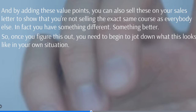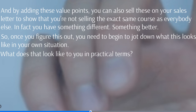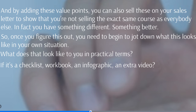Once you figure this out, you need to begin to jot down what this looks like in your own situation — in practical terms. If it's a checklist, a workbook, an infographic, or an extra video. For example, if you're applying a specific video like an email marketing course, and you want to apply that to a very specific niche, you could add an extra video or a checklist that caters to that specific niche.